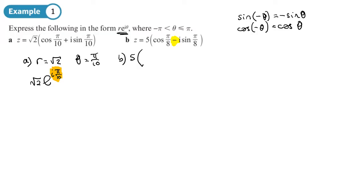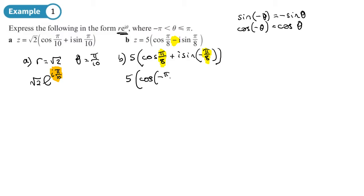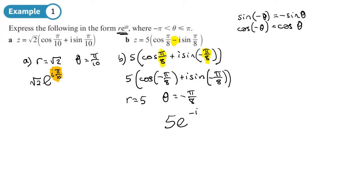We can't have the minus sign — it needs to be a plus sign — so we use the first identity to change it to a plus, which makes the argument negative. But both arguments must be the same, so we then use the second identity to change the cosine argument as well. We get the expression in the correct form: r is 5, the argument is −π/8, giving a final answer of 5·e^(−iπ/8).